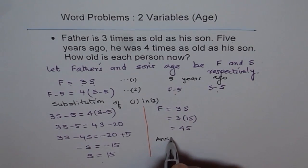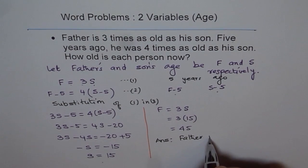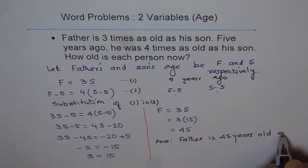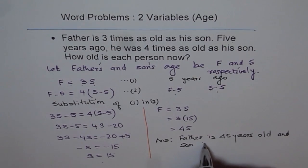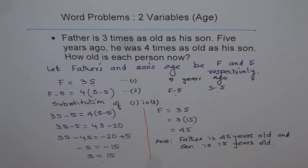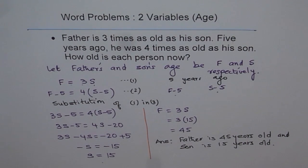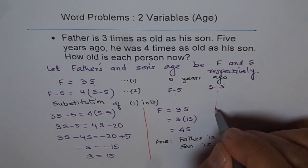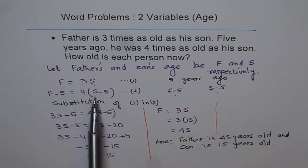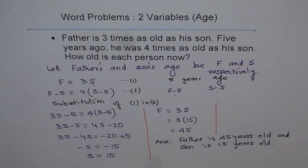So the answer is: father is 45 years old and son is 15 years old. We should check our answers — you can plug 15 and 45 back into the equations and check whether both sides are equal. That is a check you should perform before writing down your answer. I hope you find it correct. Thank you and all the best.